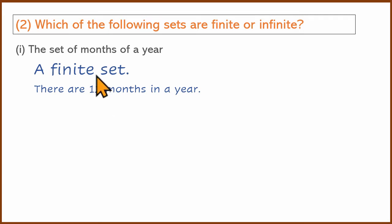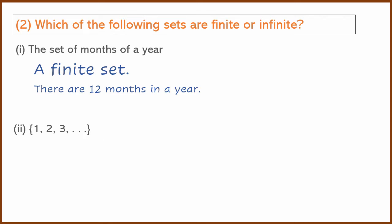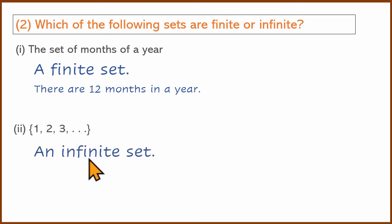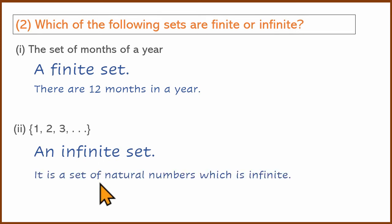So this is a finite set. Second one: 1, 2, 3, ... — this is a set of natural numbers. Natural numbers have a beginning but the end is not — it is infinity. So this is an infinite set. What is the set of natural numbers? The set of natural numbers is infinite — there is no end.